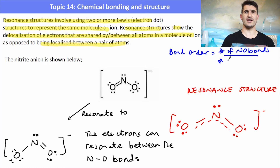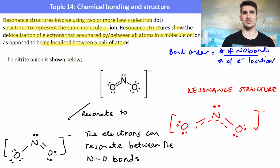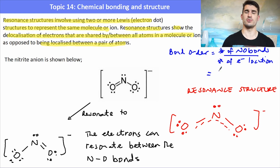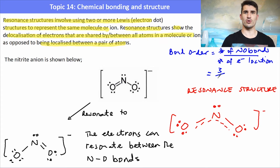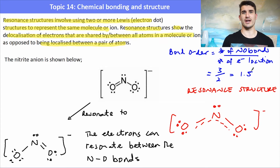The number of N–O bonds is three — we have three bonds between nitrogen and oxygen. The number of locations for these bonds is two, because we have two different places where they can be found. So the bond order is 1.5, which means it's stronger than a single bond but not quite as strong as a double bond.